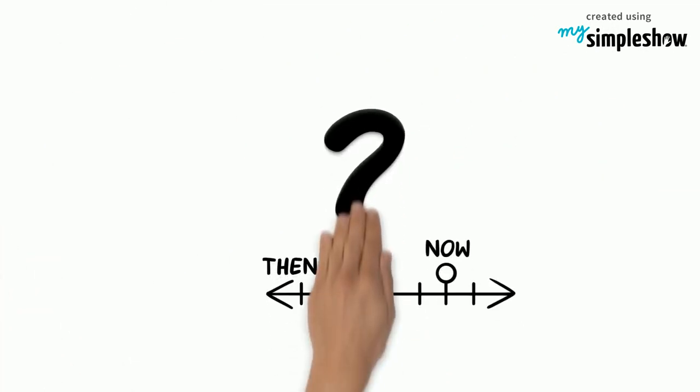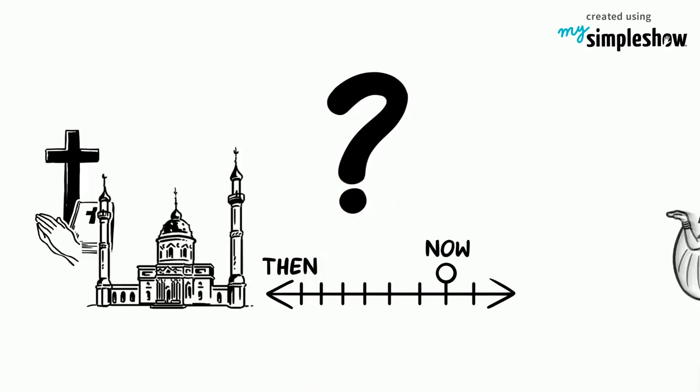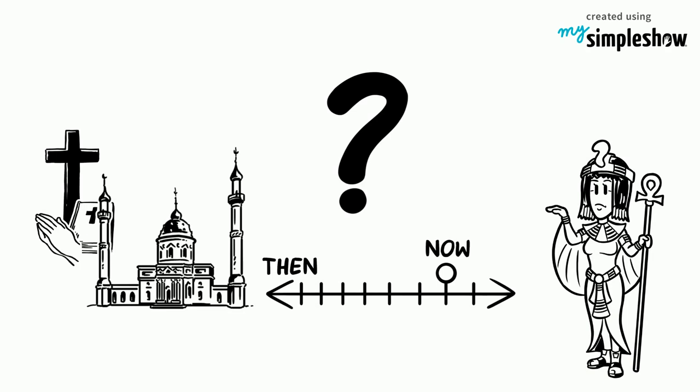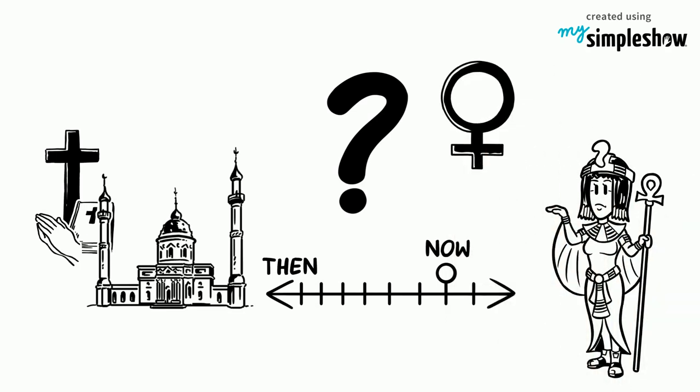The origins of the practice are unclear. It predates the rise of Christianity and Islam. It is said some Egyptian mummies display characteristics of female genital mutilation.